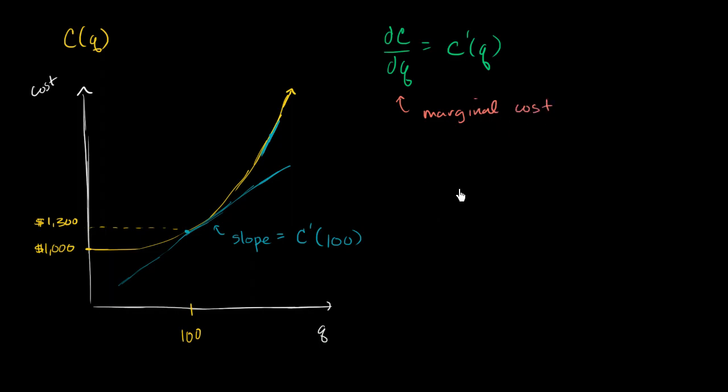Well, the reason why you care about it is you might be trying to figure out, when do I stop producing? Let's say this is orange juice. If I know that next gallon is going to cost me $5 to produce, and I can sell it for $6, then I'm going to do it.